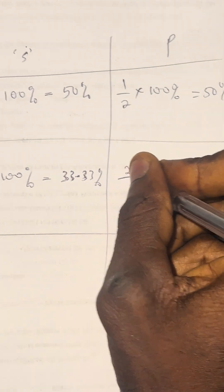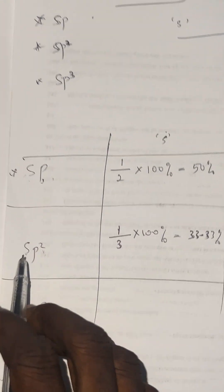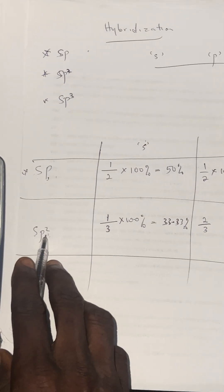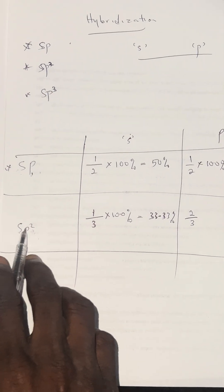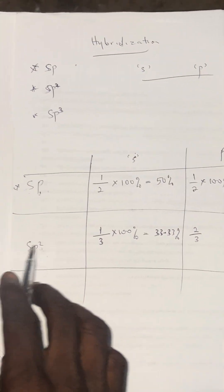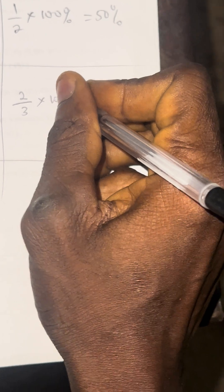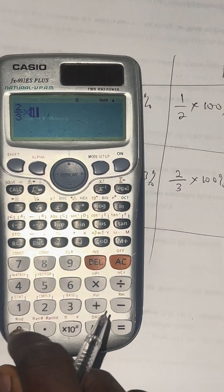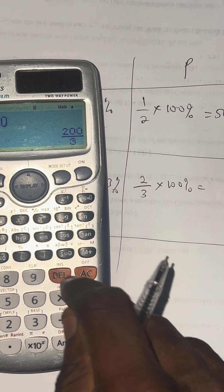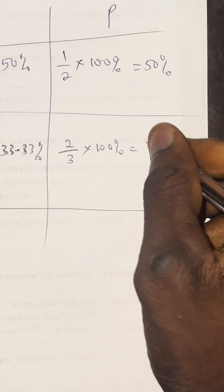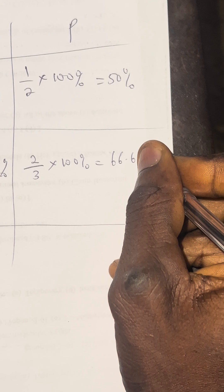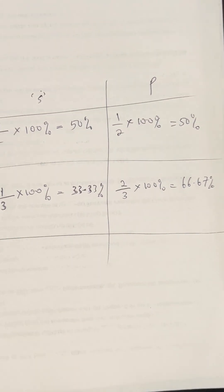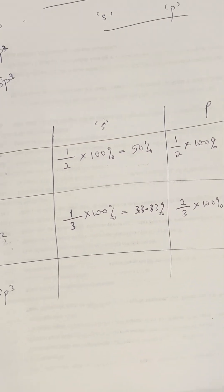Now let's calculate for the P character in SP2. How many P do we have? We have 2. The total number of both S and P is 3. That's why we have it to be 2 over 3, multiplied by 100%. We get 66.67%. So 66.67% is the percentage of P character in SP2.